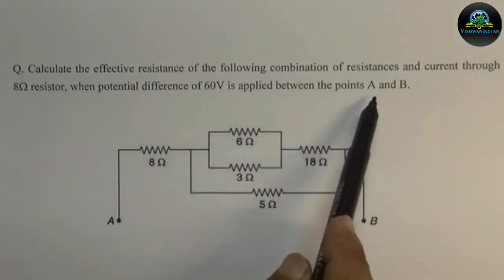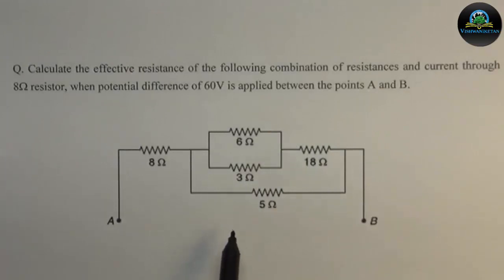The diagram of the problem is given here. You have to calculate the equivalent resistance between A and B, and the current through this circuit when a 60 volt battery is connected between A and B. Then, what will be the current passing through the 8 ohm resistance? These are our two tasks of the problem.